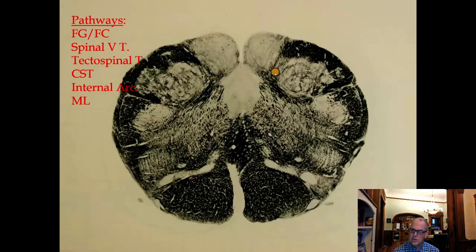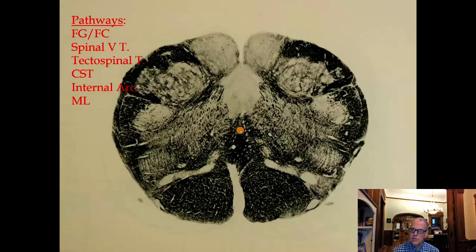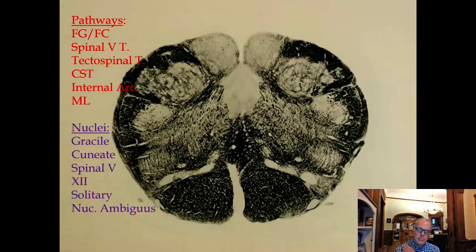The internal arcuate fibers are the equivalent of the ventral white commissure for pain and temperature, because pain and temperature crosses in the spinal cord, while vibration and proprioception crosses in the medulla. The corticospinal tract is midline along with the medial lemniscus. On top of the medial lemniscus is the tectospinal tract, which comes from the tectum — the superior and inferior colliculi — and has to do with head turning in response to visual or auditory stimuli.